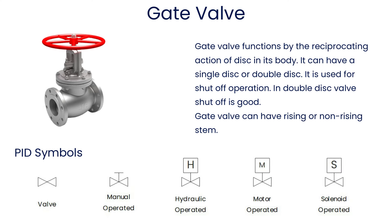Gate valve functions by the reciprocating action of a disk in its body. It can have a single disk or double disk. It is used for shutoff operation. In a double disk valve, shutoff is good. Gate valve can have a rising or non-rising stem.